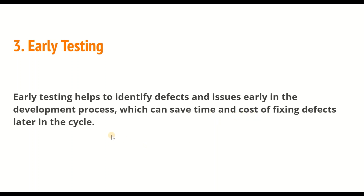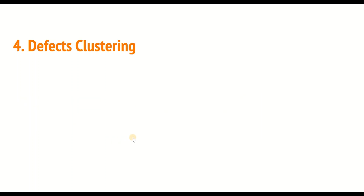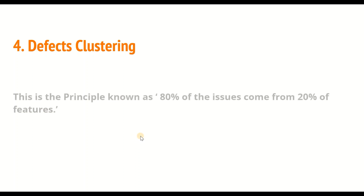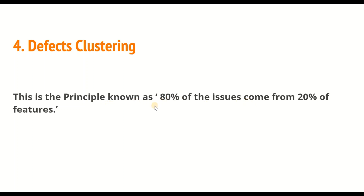The fourth principle is: defect clustering. The defect clustering principle states that a small number of modules or areas in the software system are responsible for the majority of defects. This is the principle known as 80% of issues coming from 20% of the features, so it is important to focus testing on those critical areas.